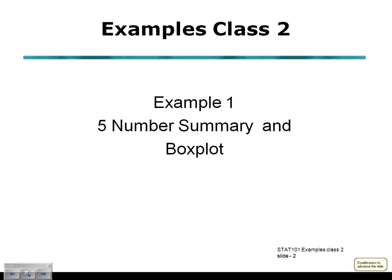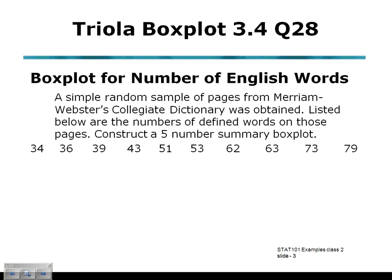Example 1 from Examples Class 2 is 5-Number Summary and Drawing a Box Plot. Our example comes from Triola, Section 3.4. It's a box plot for the number of English words from the Merriam-Webster's Collegiate Dictionary. We've got a random sample of pages from this dictionary, and listed below are the numbers of defined words on those pages. Construct a 5-Number Summary Box Plot.